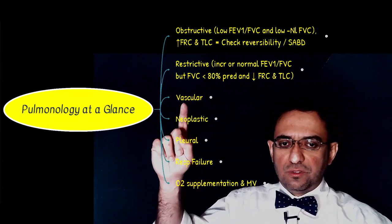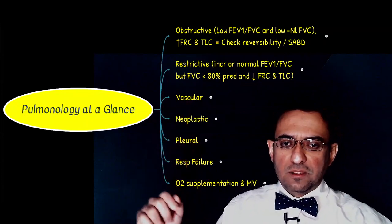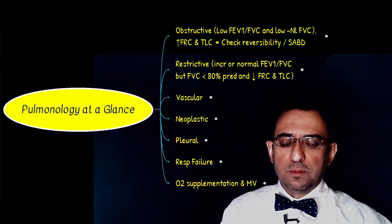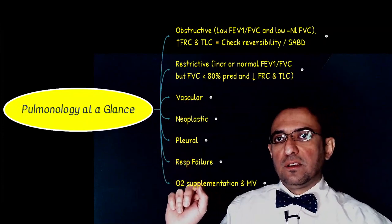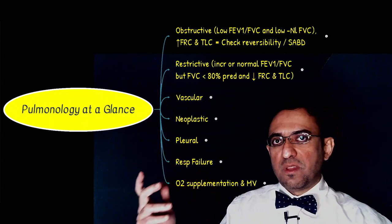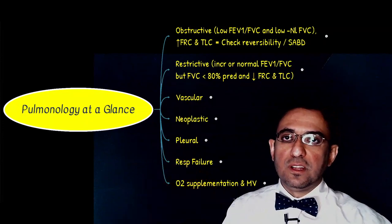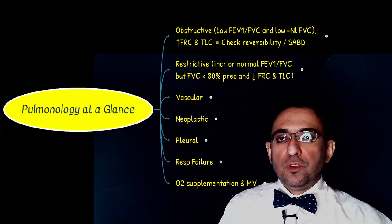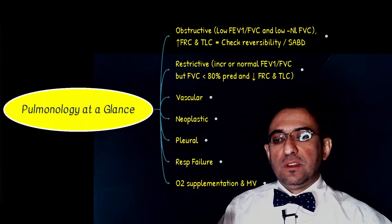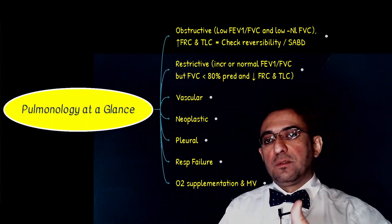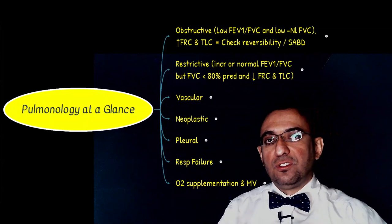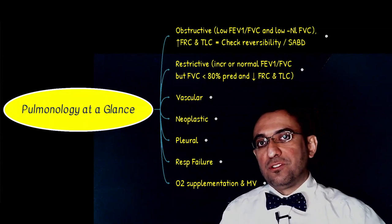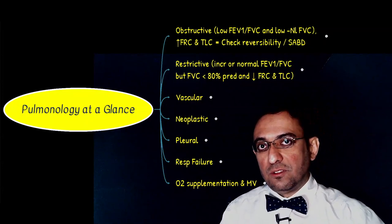Other categories such as vascular, neoplastic, pleural, and respiratory failure types have their own very specific clinical symptomatology that will help differentiate them. So the very first question is: in differentiating between obstructive versus restrictive lung diseases, what are the indices of pulmonary function tests that can come in handy?